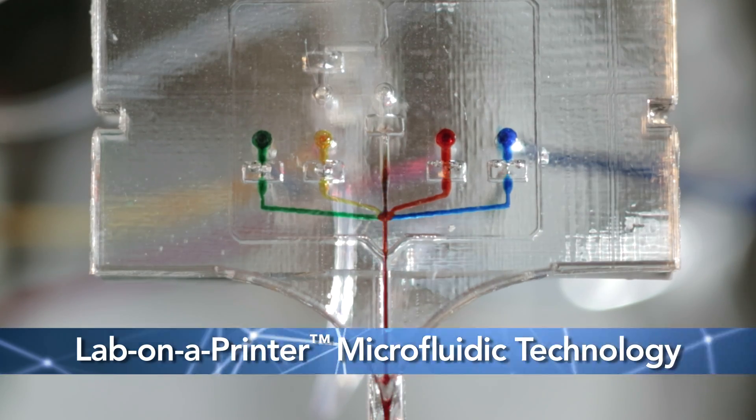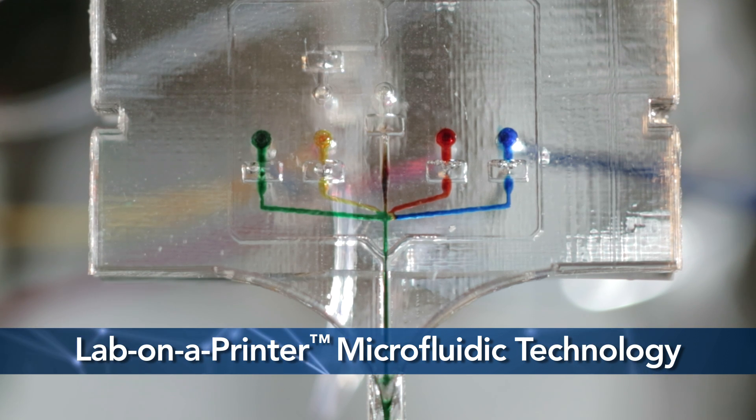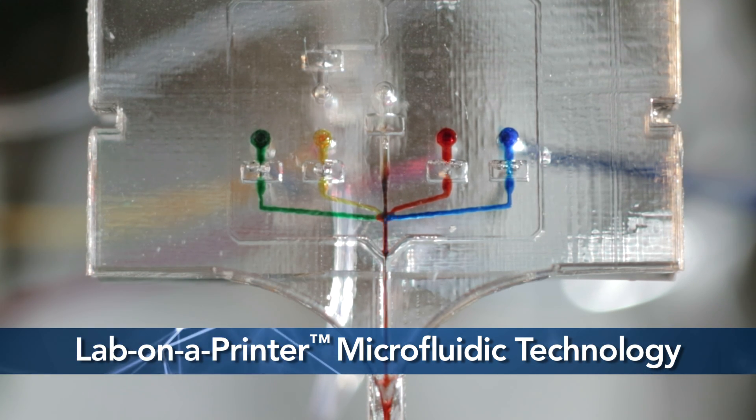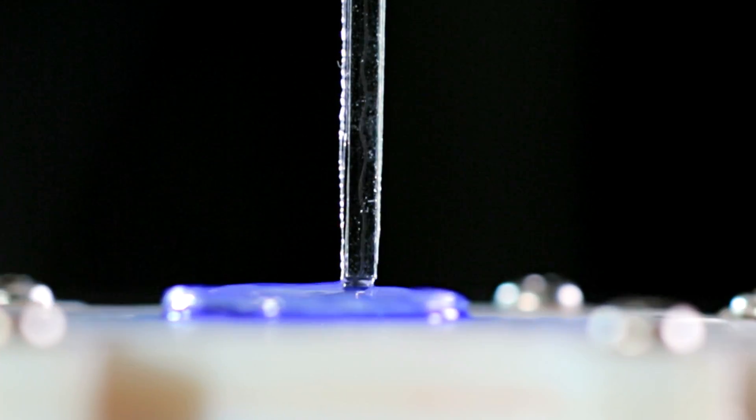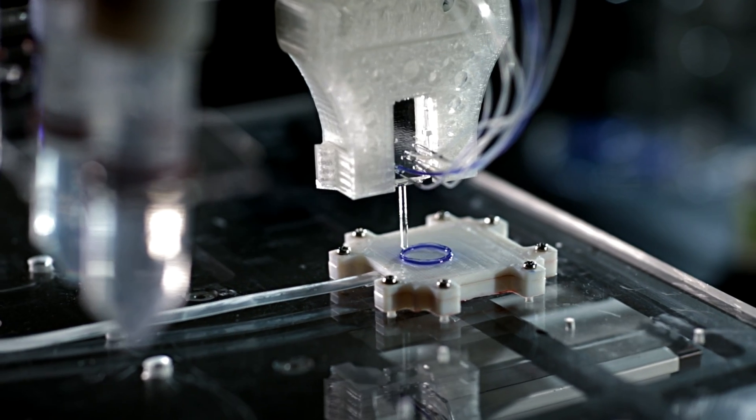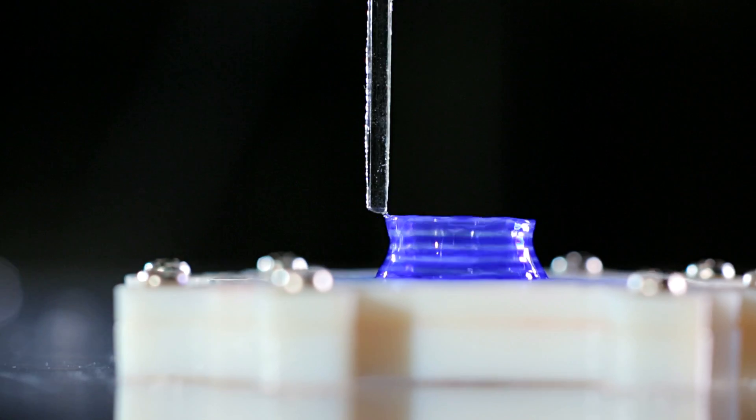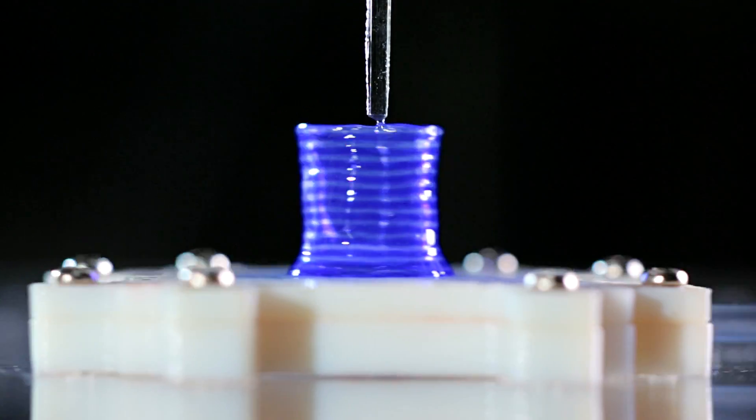Aspect's unique lab-on-a-printer microfluidic technology enables switching between different cell types and scaffold components on the fly. The living fibres we generate are deposited layer by layer to rapidly and accurately build heterogeneous tissues with well-defined regions.